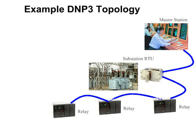Let's look at an example topology. For this example, we'll be looking at a typical substation, although many other topologies are in use. The master station communicates with the substation RTU via DNP. The substation RTU, in turn, communicates with multiple relays, also using DNP. The connection between the substation RTU and the relays can be serial point-to-point connections such as RS-232, serial multi-drop connections such as RS-485, or via a local area network or LAN.